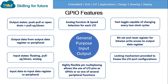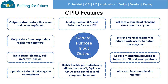The next feature is a locking mechanism provided to freeze the input/output port configuration. GPIO offers a lock register so that we can freeze the input/output configuration during initialization. The alternate function selection register allows a single pin to have an alternate function, which can be configured using the AFR register, since the pins are multiplexed to perform a variety of applications.